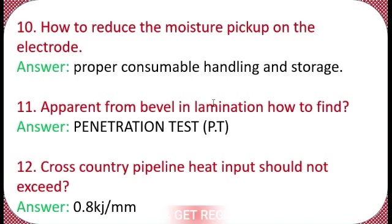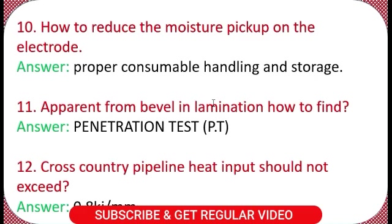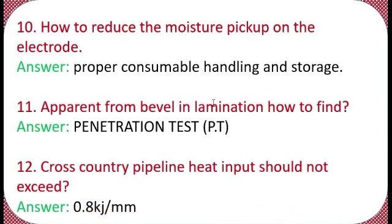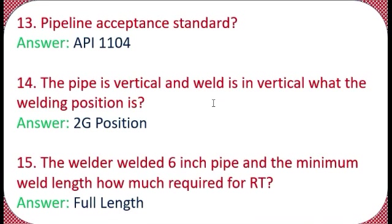Question 12: For cross-country pipeline, how much heat input should be specified in the WPS? The answer is 0.08 kilojoules per mm — this is a very important question. Question 13: What is the pipeline acceptance standard? The answer is API 1104.